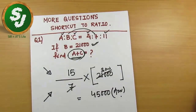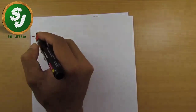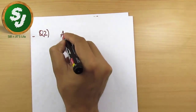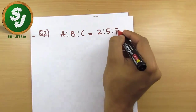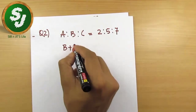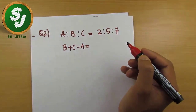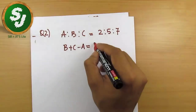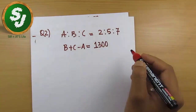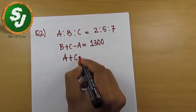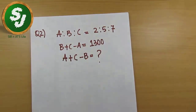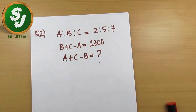Now let's make another question to practice more. Question number two: if a is to b is to c equals 2 is to 5 is to 7, and the given data is b plus c minus a equals 1,300, find the value of a plus c minus b. Let's try to solve this question very quickly using the same shortcut: numerator over denominator into a number.